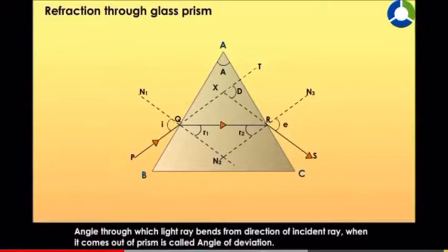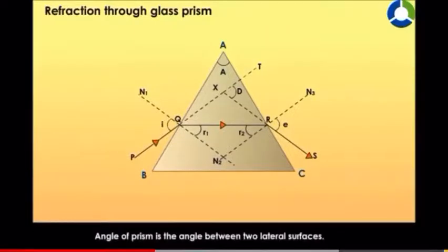The angle through which the light ray bends from the direction of the incident ray when it comes out of the prism is called the angle of deviation. The angle of prism is the angle between two lateral surfaces.